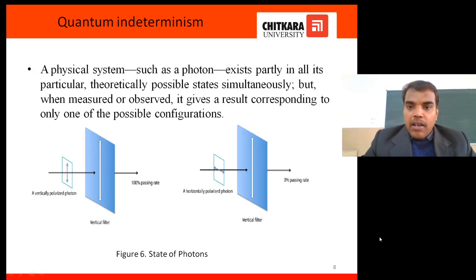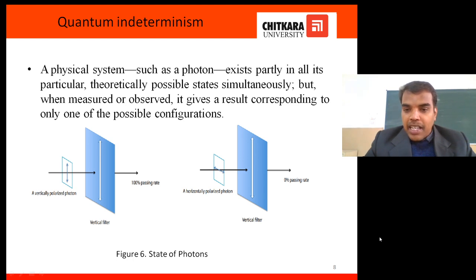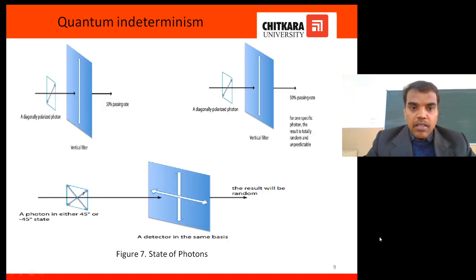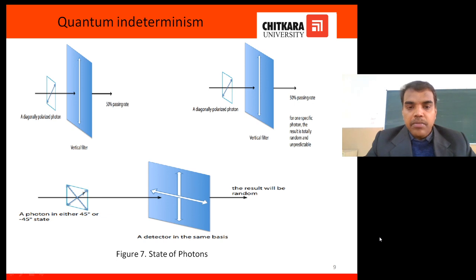A physical system such as a photon exists partly in all its theoretically possible states simultaneously — it can take vertical, horizontal, plus 45, or minus 45 degree angles. Whenever a light particle passes through a vertical filter, only the vertical state arrives as the result. If we try to pass a horizontal state through that same vertical filter, it will not pass — zero percent passing rate. So we can say the vertical state is represented as one.